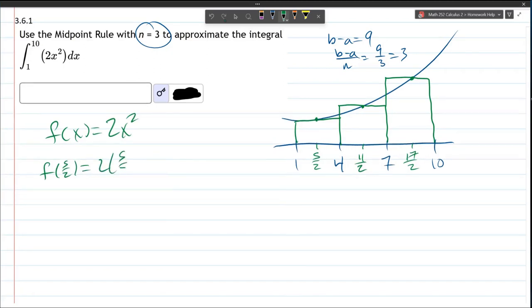2 times 5 halves squared is 25 times 2... Well, let's leave it as 2 times 25 over 2 squared. So, that will be 25 over 2.